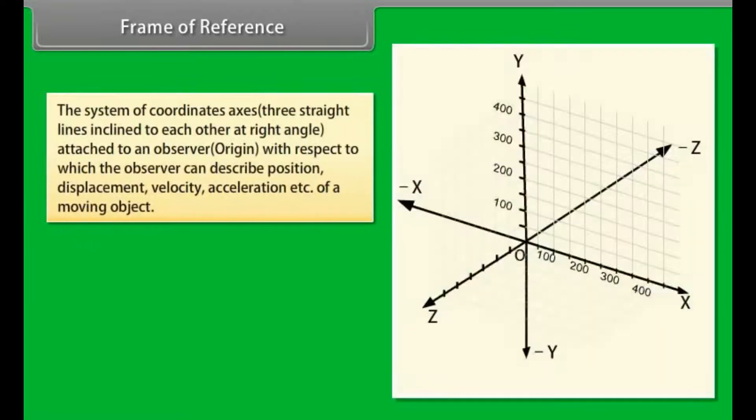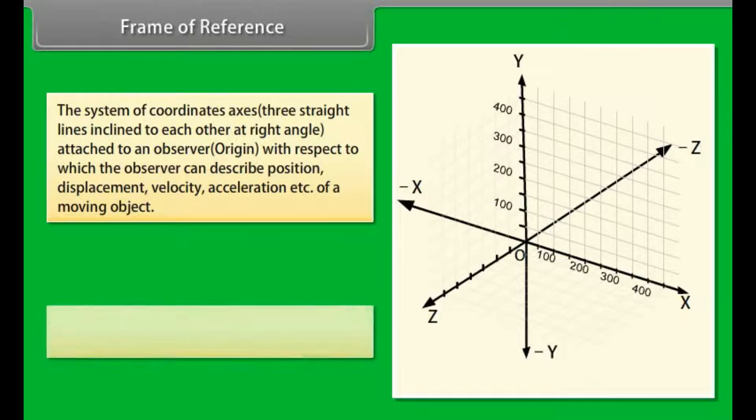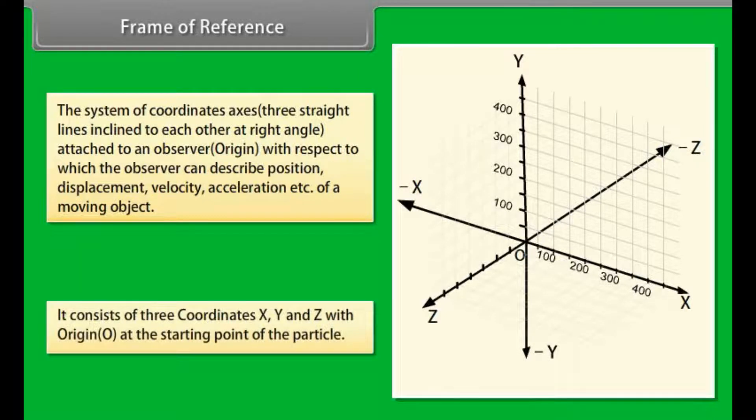Frame of reference. The system of coordinates axes—three straight lines inclined to each other at right angle—attached to an observer origin with respect to which the observer can describe position, displacement, velocity, acceleration, etc. of a moving object. It consists of three coordinates x, y and z with origin O at the starting point of the particle.